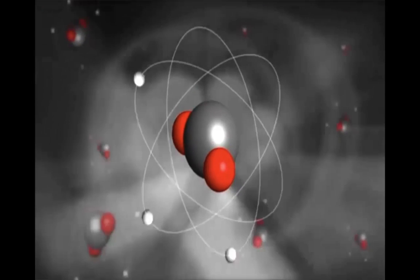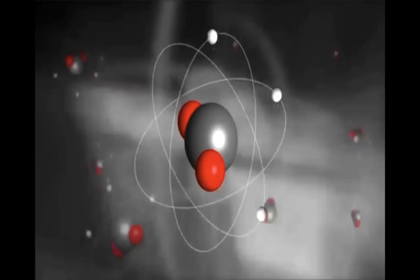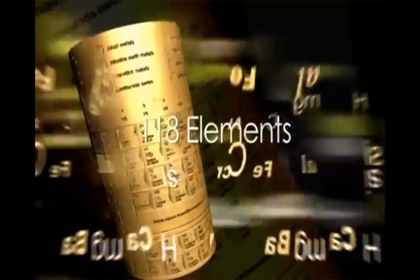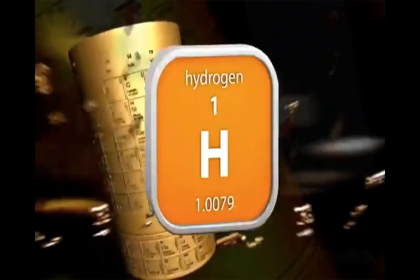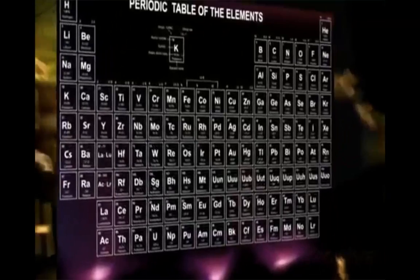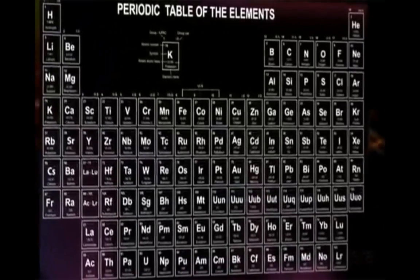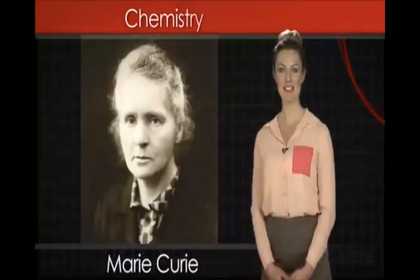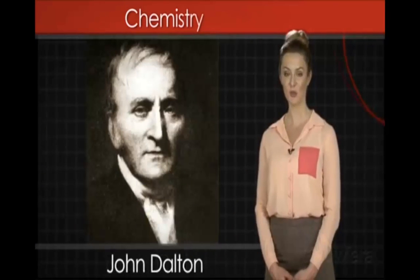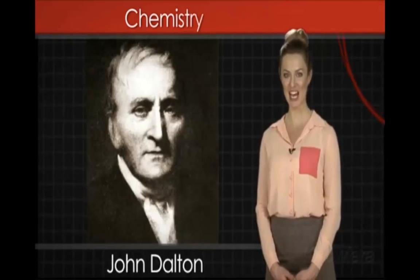When most people think of chemistry, they think of elements, substances made up of a single kind of atom. As of 2012, chemists have isolated 118 different elements. These elements are organized by their properties on a figure called the periodic table. People have been practicing chemistry for thousands of years. Famous chemists include Marie Curie, known for her research on radioactivity, and John Dalton, whose work is fundamental to our understanding of the atom.